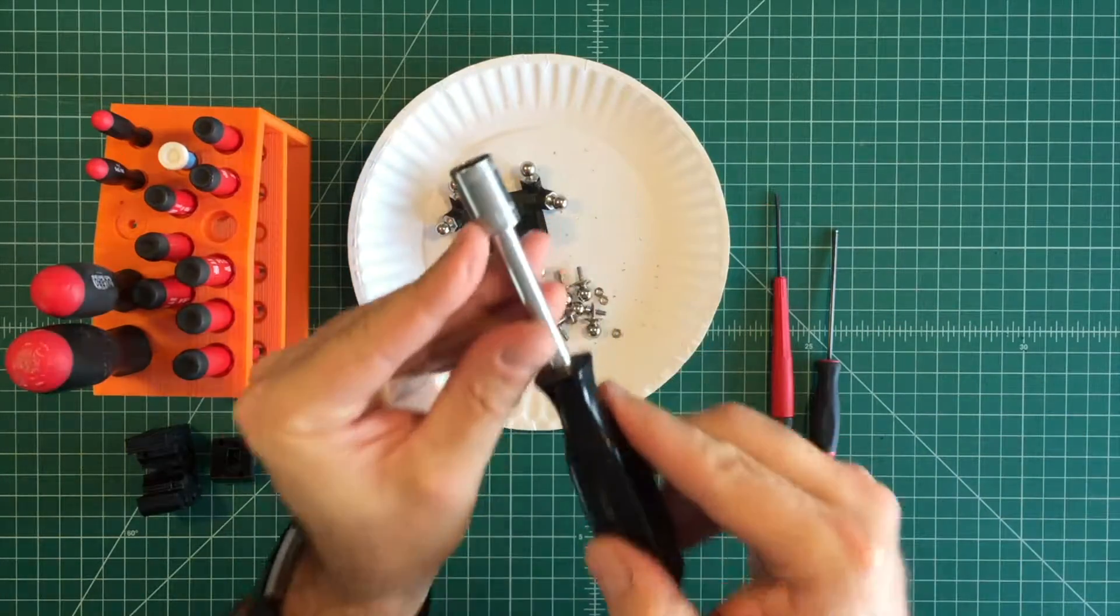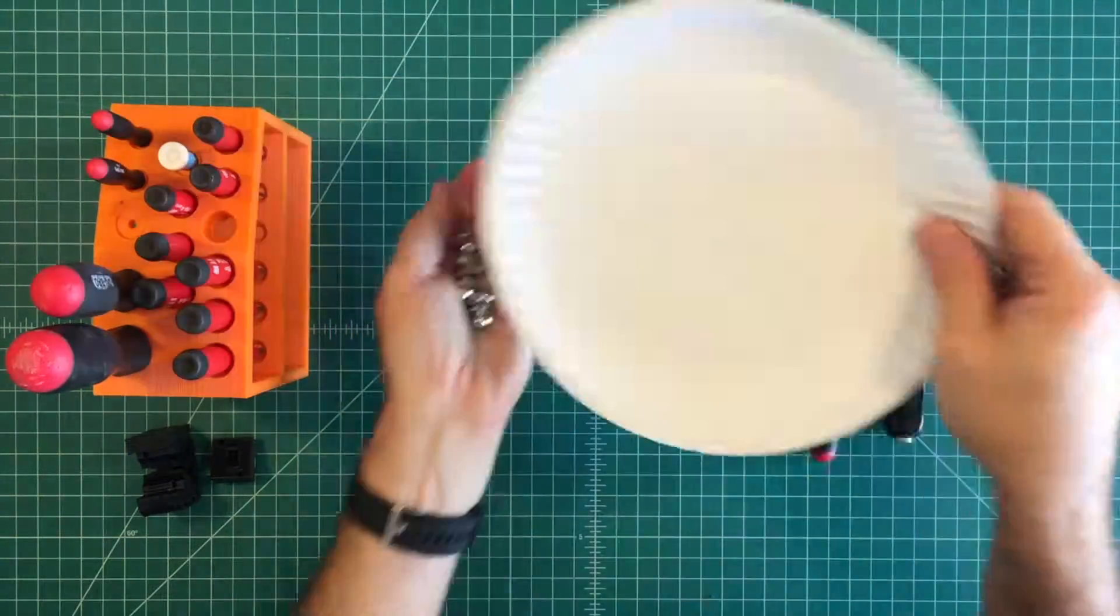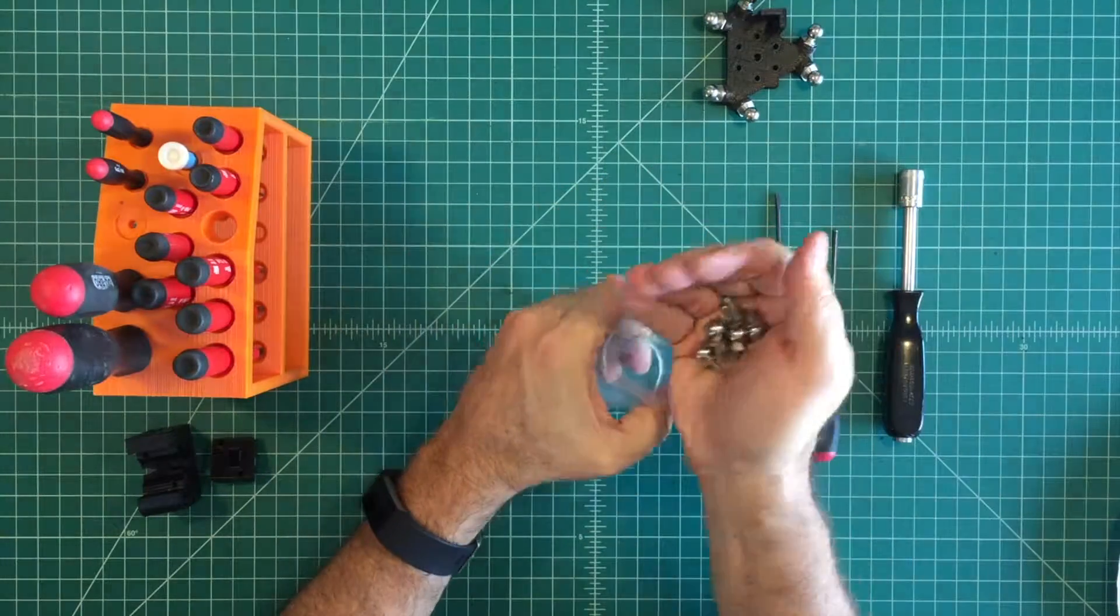Using a 10mm socket wrench tighten each mag ball with a quarter turn. Then save the remaining mag balls for later assembly.